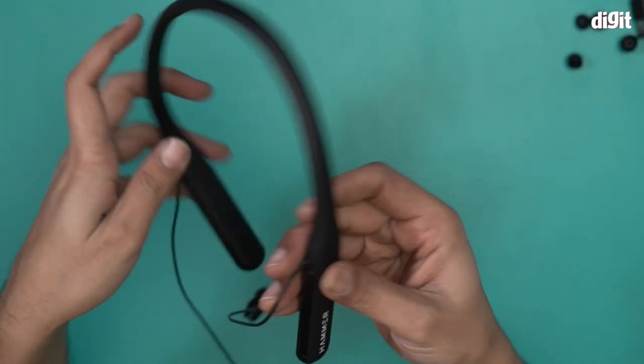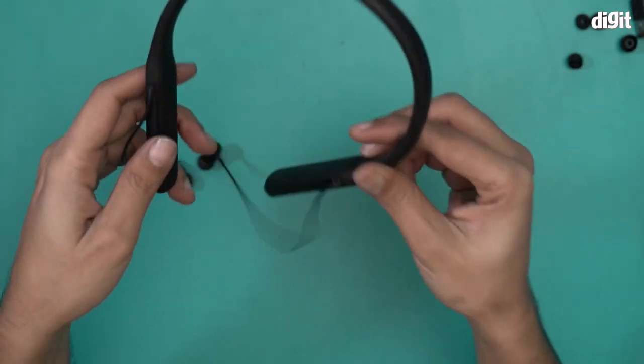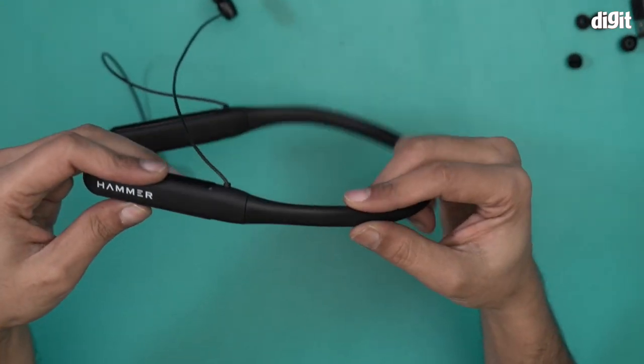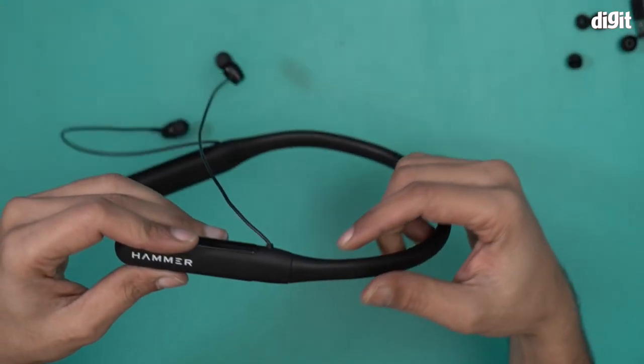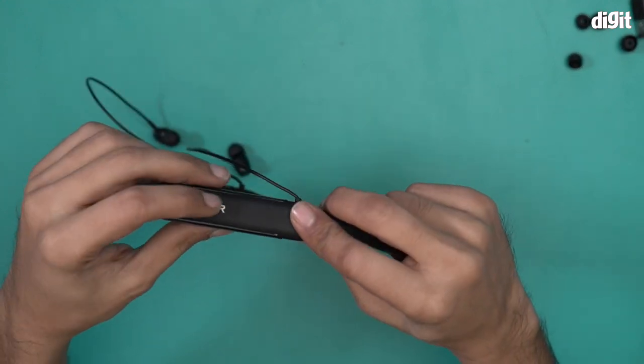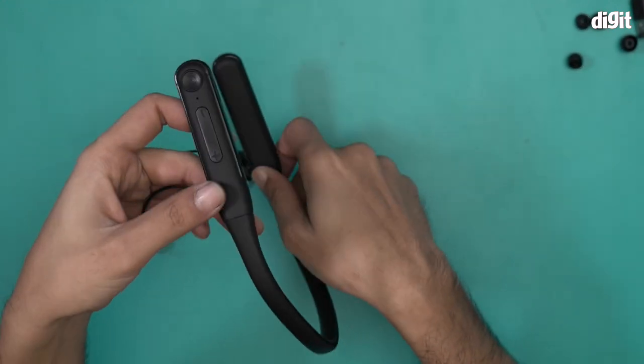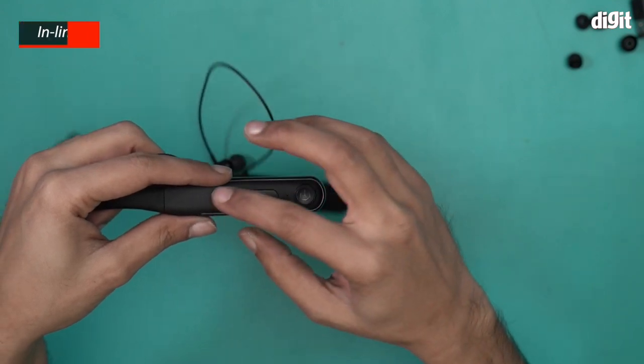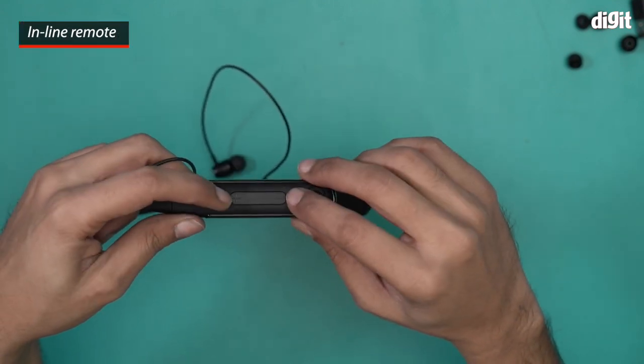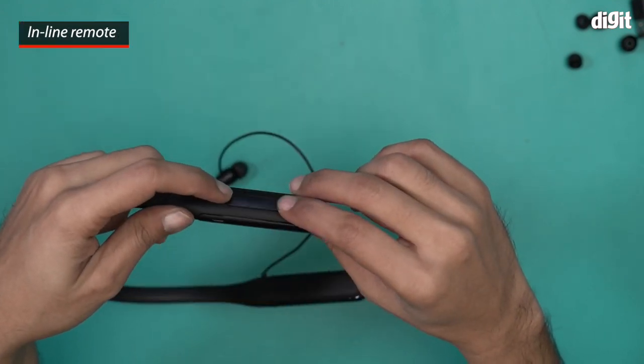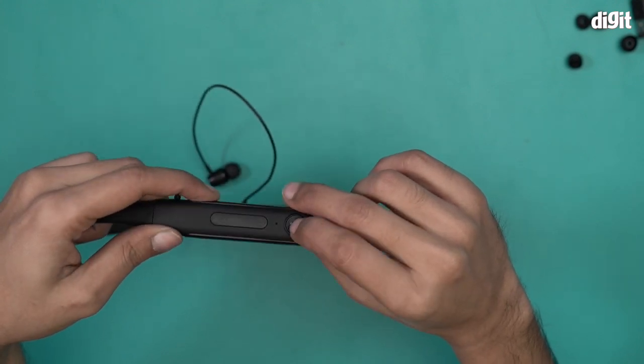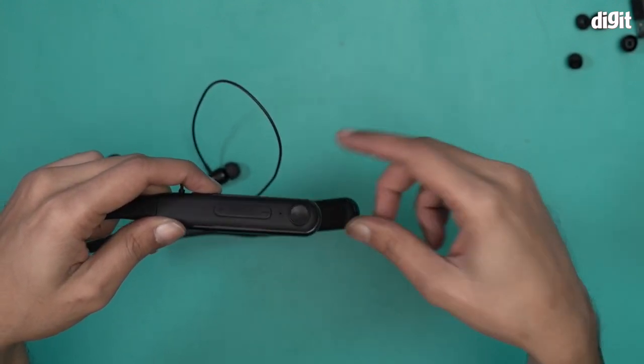There are two modules attached to this neckband. These are two very thick modules, actually thicker than the neckband right over here. This is the left one, it only has Hammer written on it. This is the right one, which also has your inline control. This is the plus/minus button for changing the volume and changing tracks, and this is for powering it on and also to shop into the different modes.